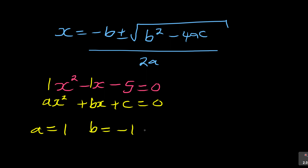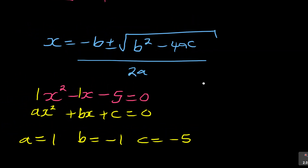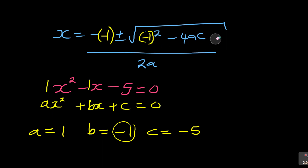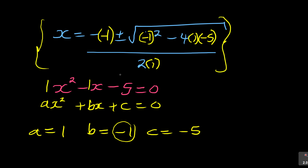When substituting into the formula, students forget the negative sign on b. Where there is a b, you must put it in brackets: (−1). So it's −(−1) ± √[(−1)² − 4(1)(−5)], all over 2(1). Always use brackets when substituting negative values — that's where students get things wrong.